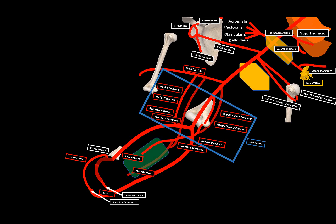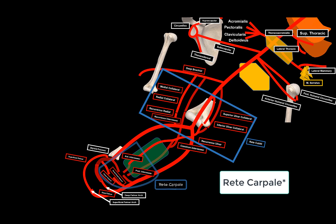The wrist receives blood through dorsal and palmar carpal networks. The palmar carpal network is formed by palmar carpal arteries from both the radial and ulnar arteries. The dorsal carpal network is formed by four arteries: dorsal carpal arteries from both the ulnar and radial, plus the posterior interosseous artery and the anterior interosseous artery, which pierces the membrane to also contribute. Together this forms the retia palmaris.